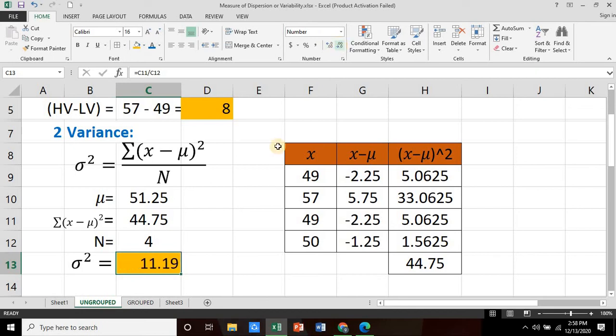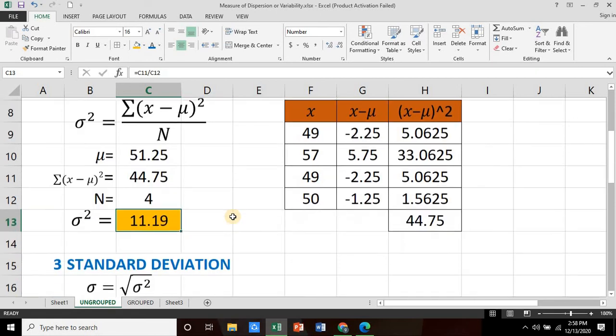And that is 11.1875. We try to round it off to 2 decimal places, so that's 11.19. So that would be our variance.